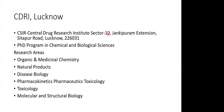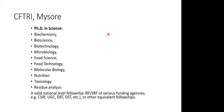For example, CDRI Lucknow has facilities for PhD programs in chemical and biological sciences. Research areas include organic and medicinal chemistry, natural products, pharmacokinetics and pharmaceutics, toxicology, and molecular and structural biology. Another example is CFTRI Mysore, which has a lot of PhD courses in sciences: biochemistry, bioscience, biotechnology, microbiology, food science, food technology, molecular biology, nutrition, toxicology, and residue analysis such as pesticide residue analysis in food. One can enter through NET and get a JRF or SRF fellowship there.